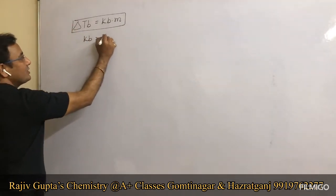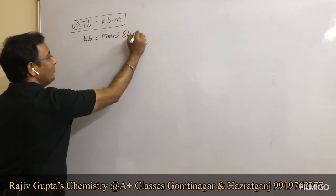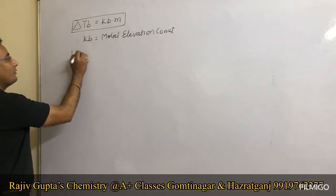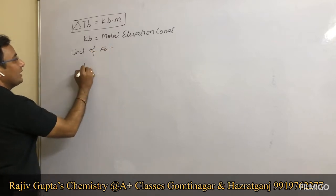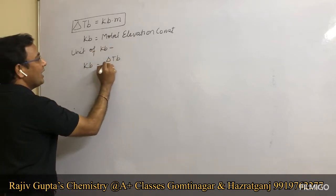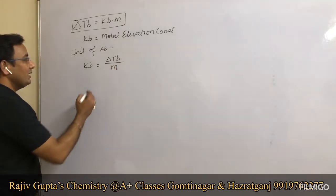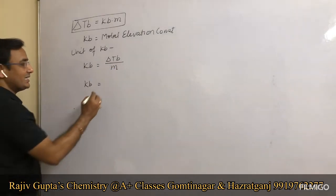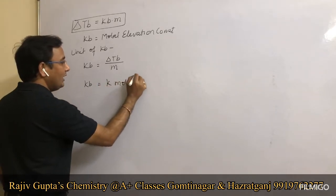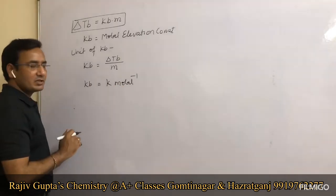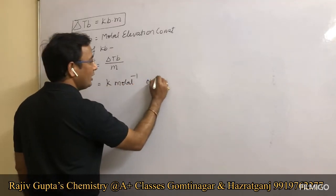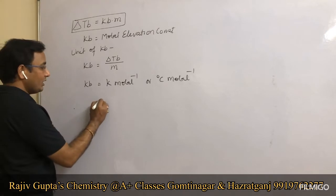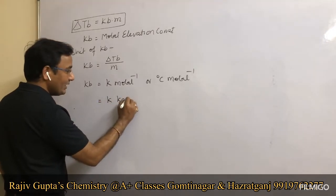Kb is a constant known as molar elevation constant. The unit of Kb is derived from Kb = ΔTb / m. Since ΔTb is temperature, the unit of Kb is Kelvin per molal, or degree Celsius per molal.